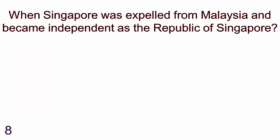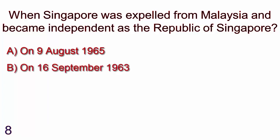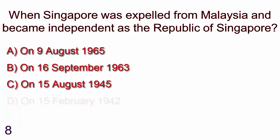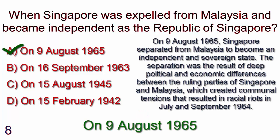When was Singapore expelled from Malaysia and became independent as the Republic of Singapore? On 9th August 1965, on 16th September 1963, on 15th August 1945, on 15th February 1942. Answer is on 9th August 1965.